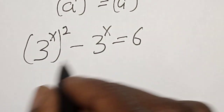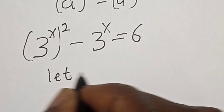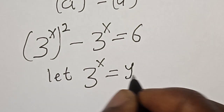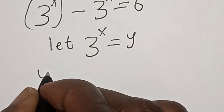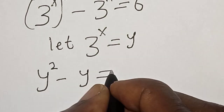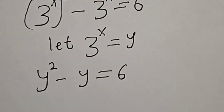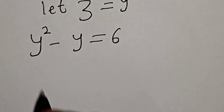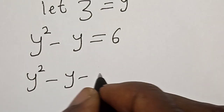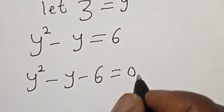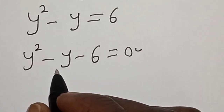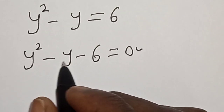Let 3 raised to power s equal y. Now we have y squared minus y is equal to 6. Then we have y squared minus y minus 6 is equal to 0. This is a quadratic equation which can be solved by using either the factorization method or the quadratic general formula.